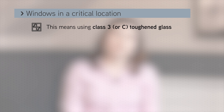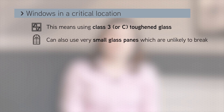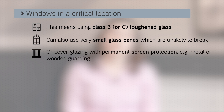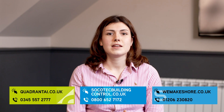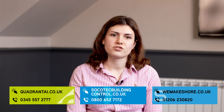The other approach is to use small panes of glass, which are very unlikely to break, or cover the glazing with a permanent screen protection such as metal or wooden guarding. These decisions must be detailed as part of the calculations package that you provide to building control. And if you have any questions, just get in touch with us.